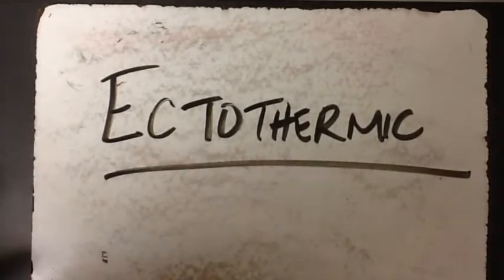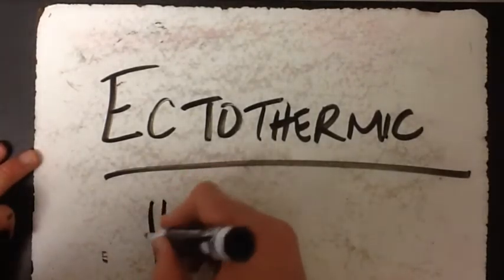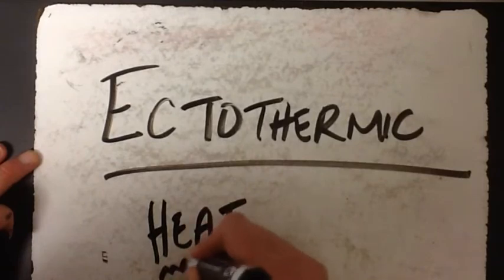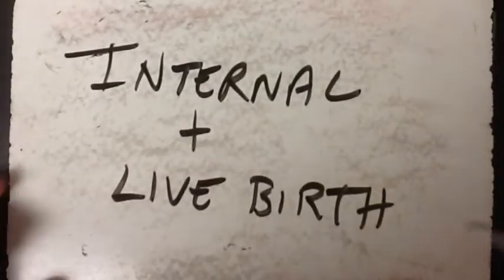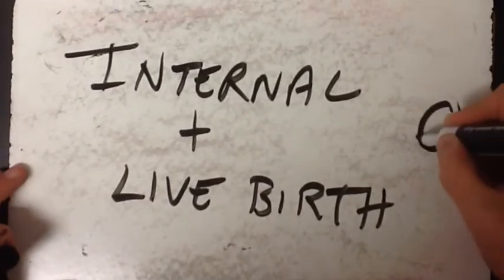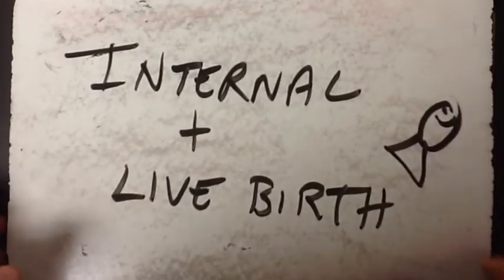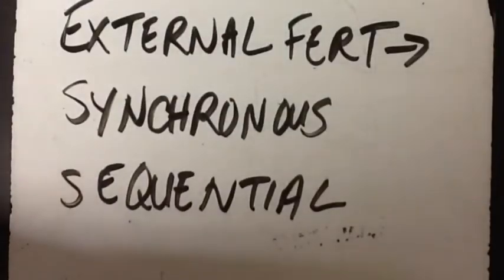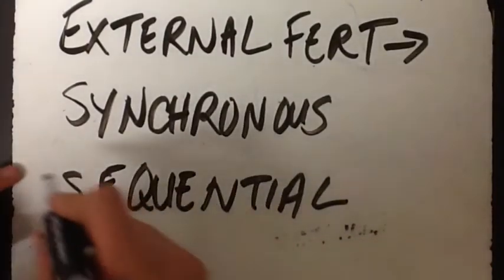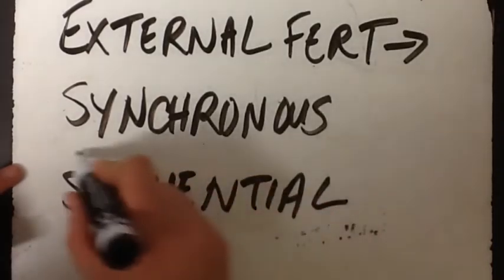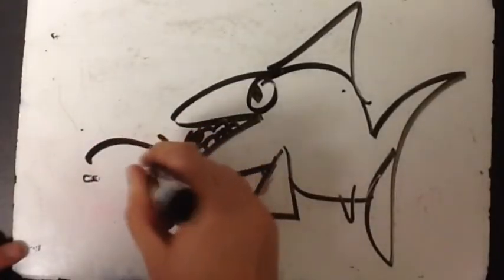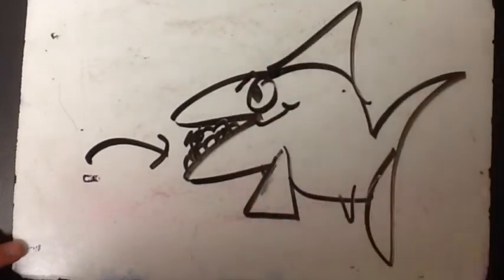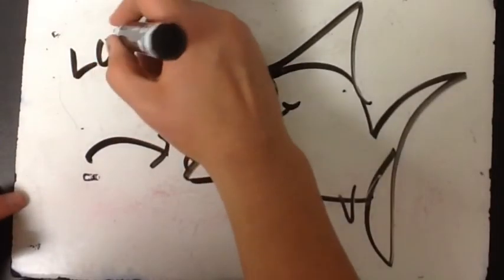Fish are ectothermic, meaning they get their heat from the environment — reptiles are also like this, but we are not. There's a lot of diversity in fish reproduction. Methods include external fertilization, internal fertilization, and live birth. With external fertilization, it can be synchronous — both parents involved at the same time — or sequential, where eggs are laid and the male comes later to fertilize them. Some fish even hold eggs in their mouth after fertilization.